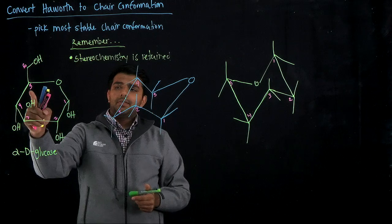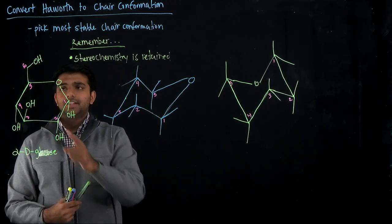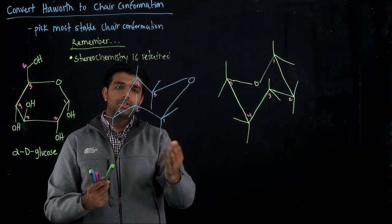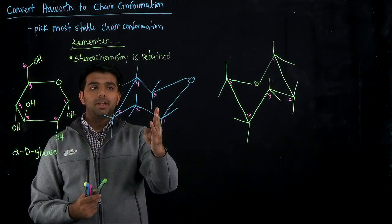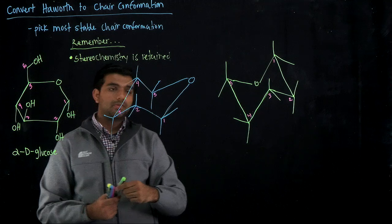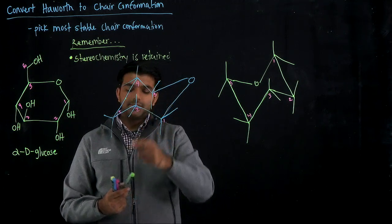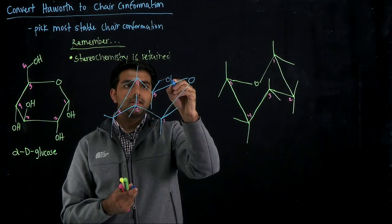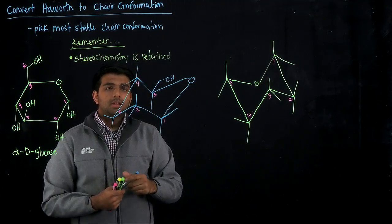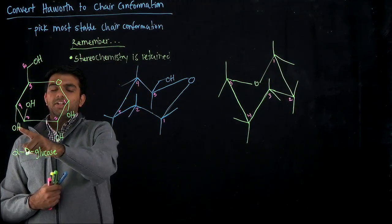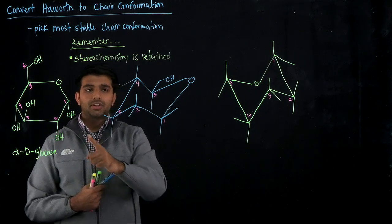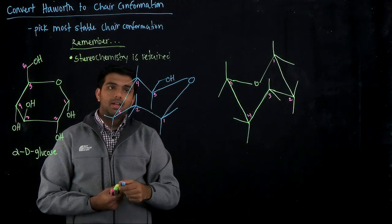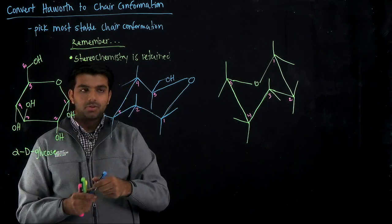Carbon number five on our Haworth projection has a CH₂OH going up. Stereochemistry is retained, so the CH₂OH is going to be going up on carbon number five in the chair conformation. In this case, going up is equatorial, so I'll draw in my CH₂OH going up. Carbon number four has an OH going down. Stereochemistry is retained, so the group is going down on carbon four, and in this case carbon four is equatorial.